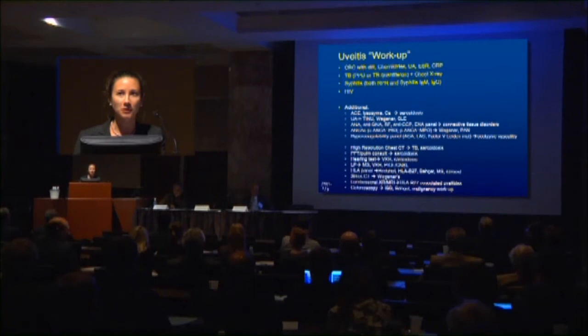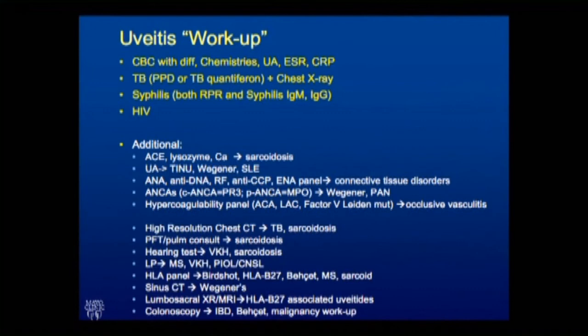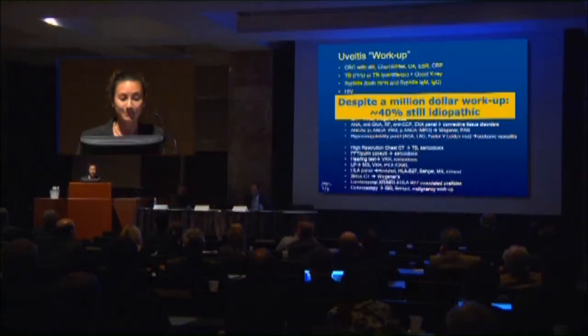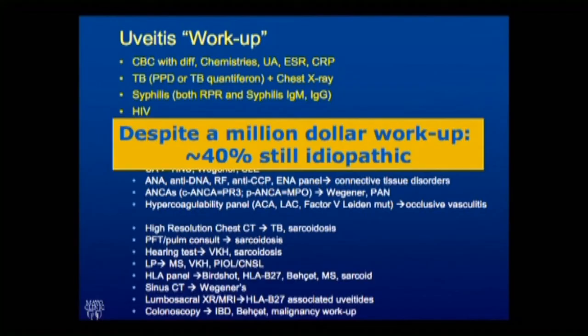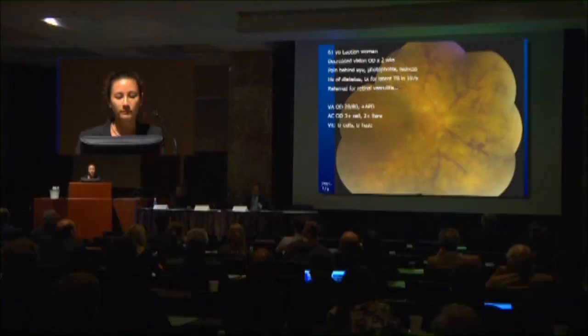There are lots of labs and that quote-unquote uveitis workup you'll see written in a note — the question is always what exactly was done. When I see a patient, I do a bit of combing through to figure out which labs were done when. You could order everything under the sun and get a lot of confusing results, so it's usually better to be somewhat targeted, and keep in mind the patient's pocketbook. Despite a million-dollar workup, at least 40% of cases could still be idiopathic — but we should never fall on that diagnosis easily.